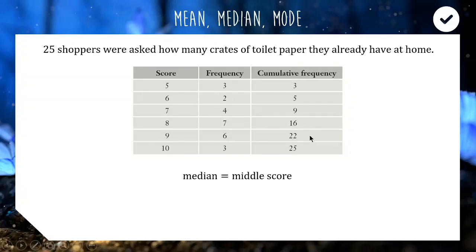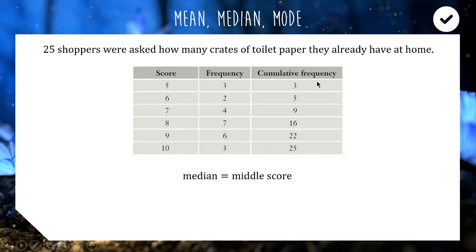The first three scores are in the first row, then the next two bring us to five, up to nine is in the next row, and from nine to 16 is in the following row — so that's where the 13th score must be. Our median is going to be a score of 8.